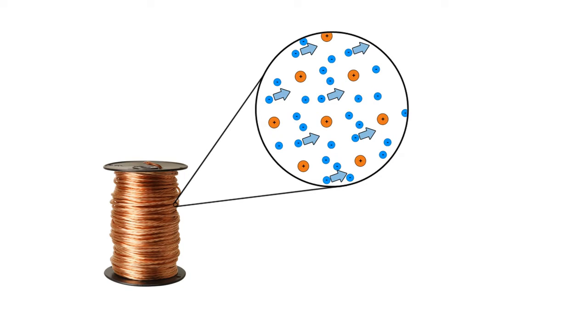But since the negatively charged electrons repel each other when you move one electron from atom to atom you'll also move other electrons from atom to atom.